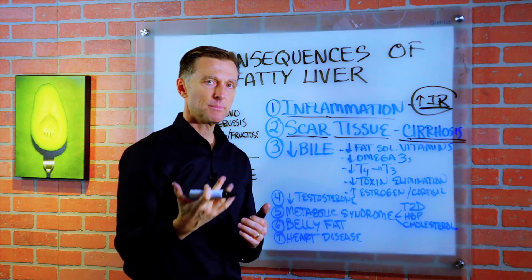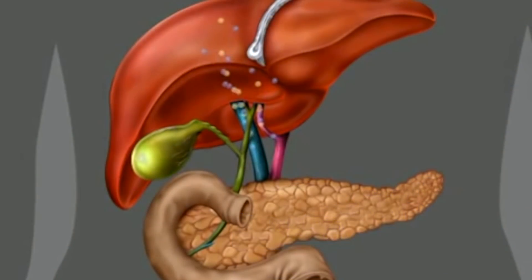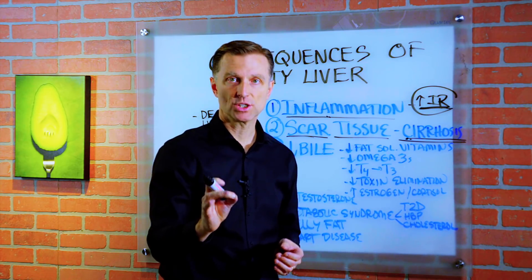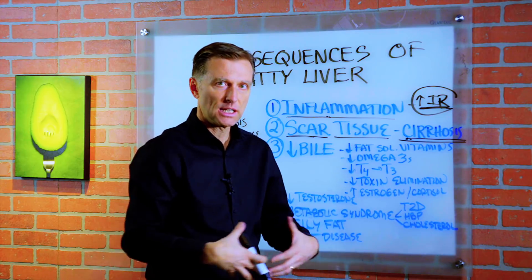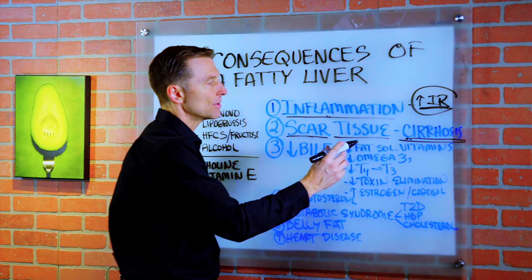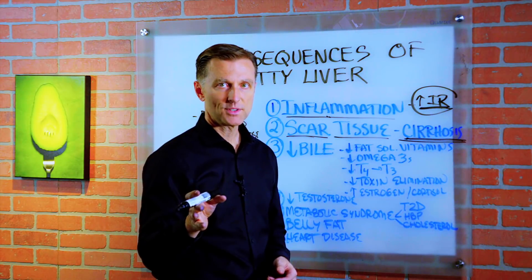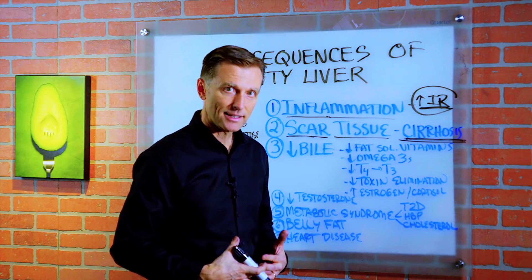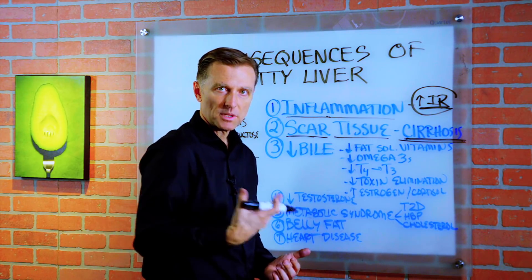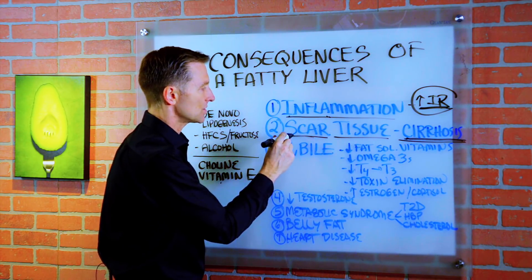Most liver problems are asymptomatic — you don't have any symptoms for a long period of time until you start losing actual liver cell function. You would have to lose a significant portion of your liver for certain things to show up, like ascites, where you have fluid in the gut. That might not show up until 90% of your liver is destroyed. A real good way to know if you have a liver problem is just look down and see if you have a gut. If you do, that means you have a lot of visceral fat spilling over from the liver, because the liver is already filling up with fat. That fat then causes inflammation and eventual scar tissue.